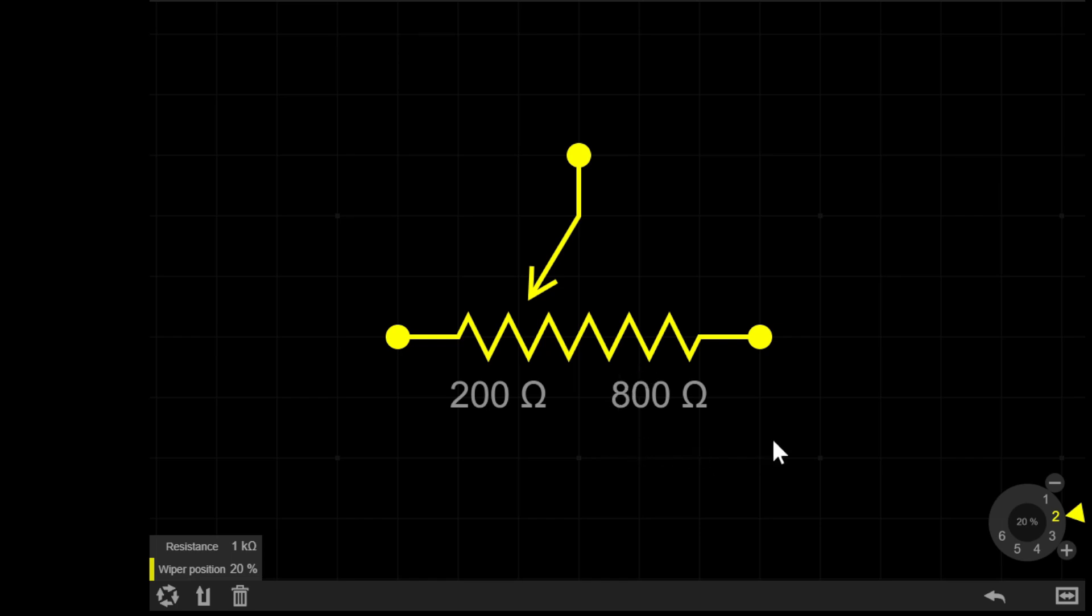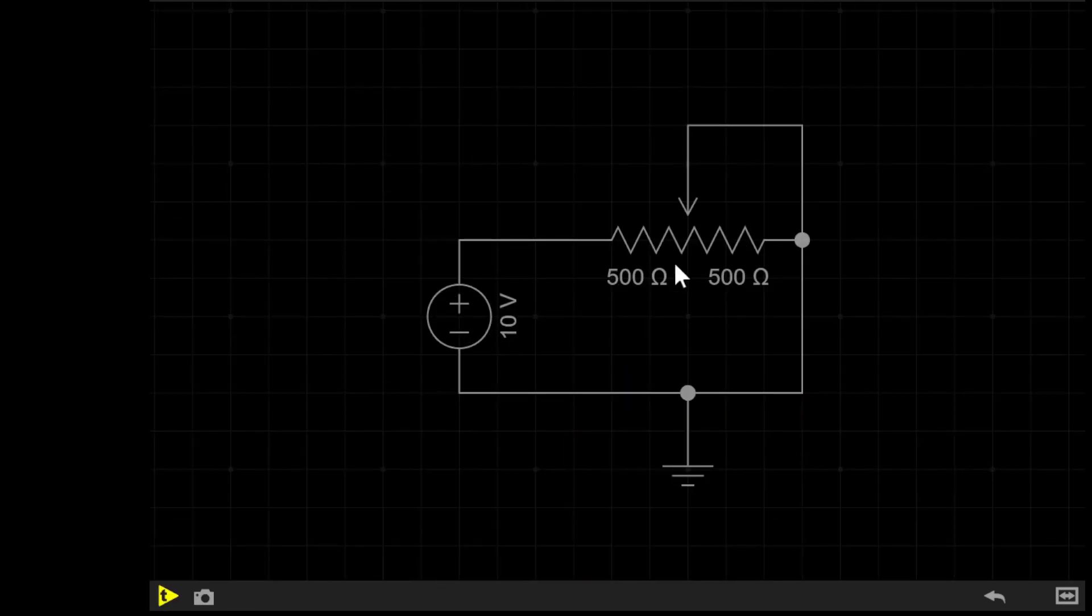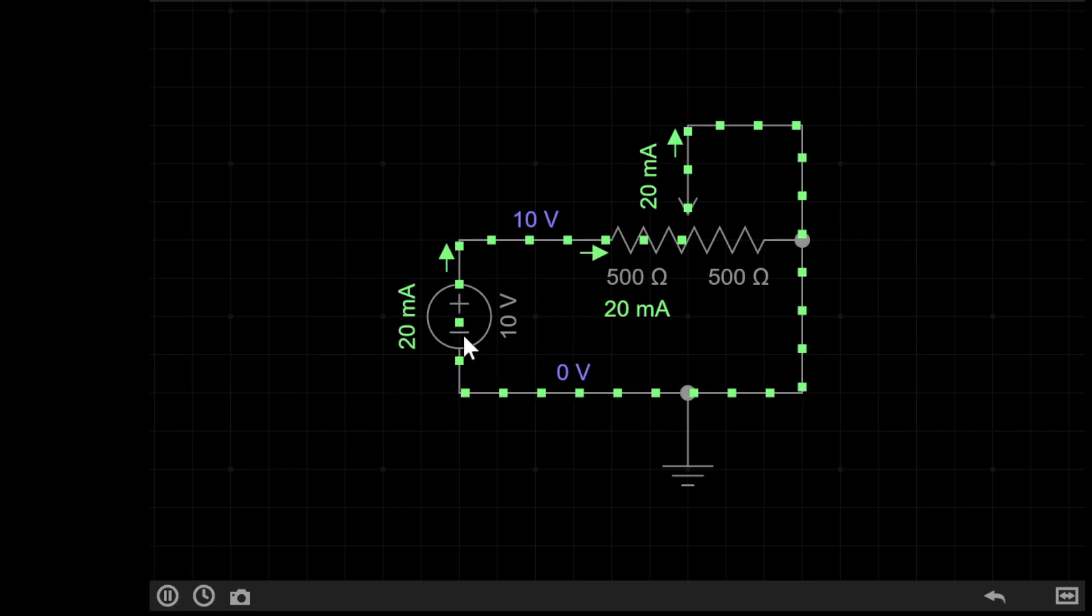Let's wire this thing up with a DC supply and test it. So I've added a 10 volt supply with my pot. If I now simulate the circuit, you can see the current flows through the circuit, through the supply, through the first half of the pot, which is roughly 500 ohms, and then back around.